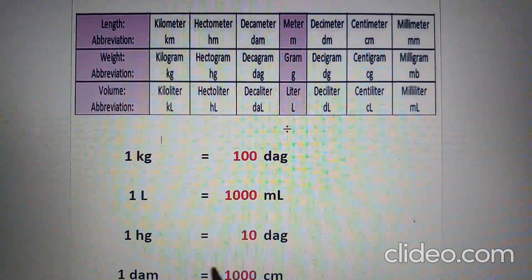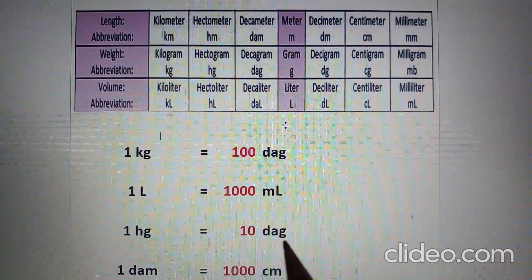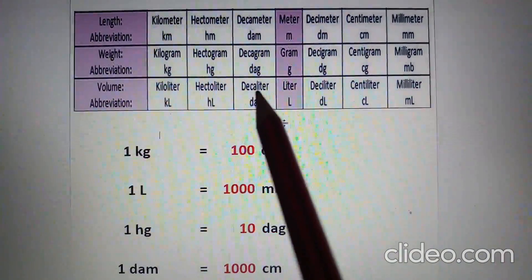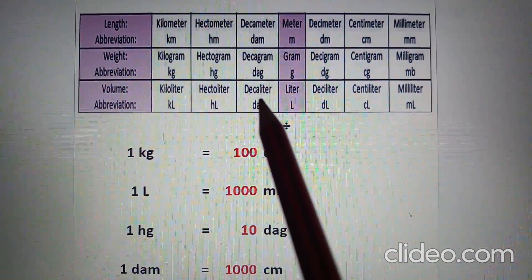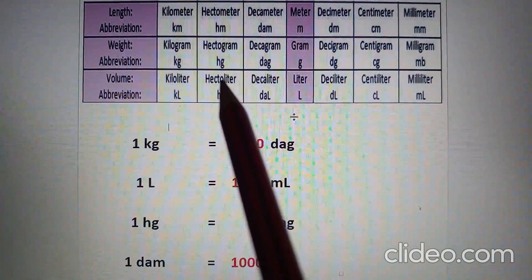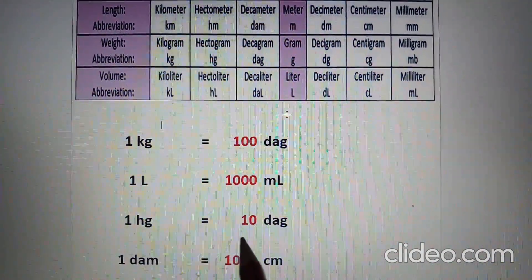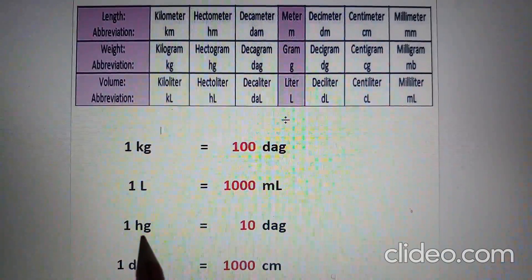1 hectogram equals how many decagrams? From hectogram to decagram, we move one step to the right. Therefore, there are 10 decagrams in 1 hectogram.